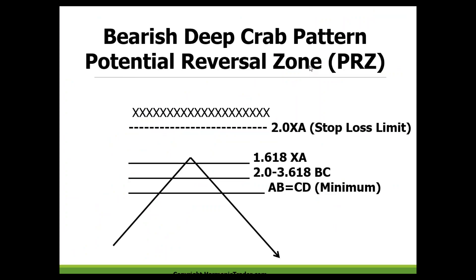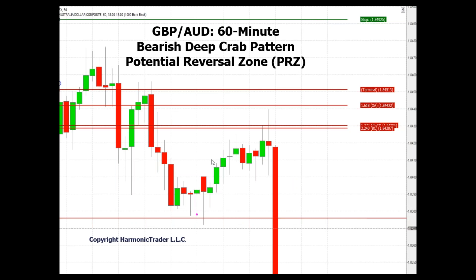The potential reversal zone in the bearish deep crab has that 1.618 measurement as the top end of the area. Again, stop loss goes above 2.0, and then we look at the other AB equals CD and the BC measurement that best fits all within that 1.618 area. Looking at the price action in the potential reversal zone on the 60-minute chart, right here is where we hit it the first time and start stalling out. The 1.618 measurement is the top end, so the main zone is right in here between 184.30 and 184.45. It tops out as high as 184.75, but we're looking for the reversal at or just above that 1.618 level.